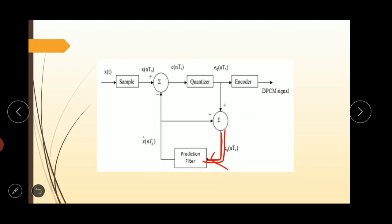This makes the prediction more and more close to the actual sampled signal. We can observe that the quantized error signal EQ of NTS is very small and can be encoded by using small number of bits. Thus, number of bits per sample are reduced in this type of modulation technique means DPCM.